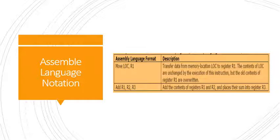Next is assembly language notation, which is used to represent machine instructions and programs. For example, MOV LOC, R1 transfers the data from memory location LOC to register R1. The content of LOC is unchanged by the execution of this instruction, but the old content of register R1 is overwritten.